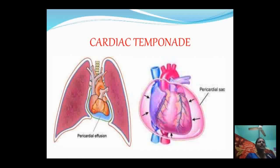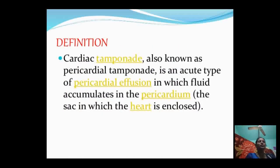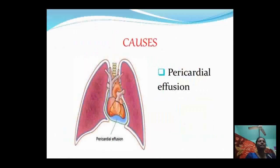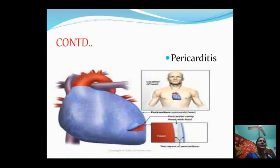Cardiac tamponade is an acute type of pericardial effusion in which fluid accumulates in the pericardium. Causes include pericardial effusion — an abnormal accumulation of fluid in the pericardial cavity — which leads to increased intrapericardial pressure and negatively affects heart function, and pericarditis, which is inflammation of the pericardium causing sudden onset of sharp chest pain.